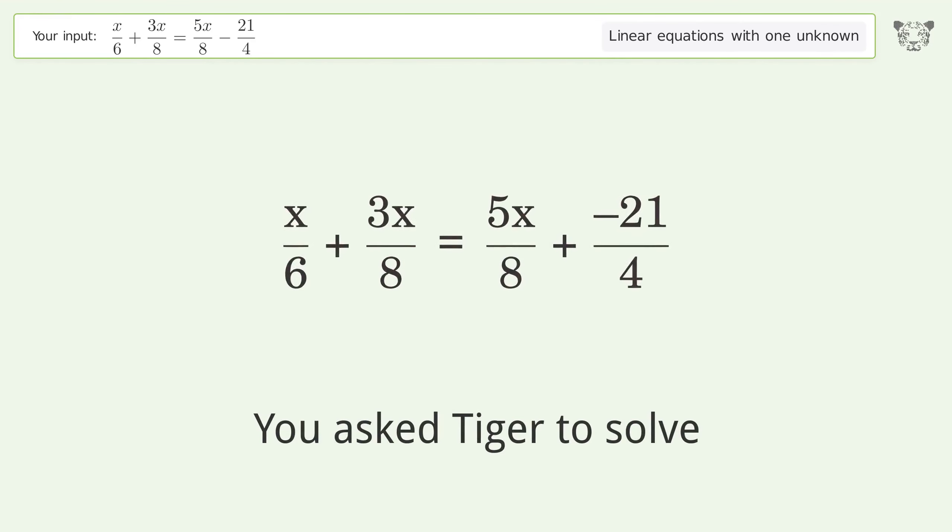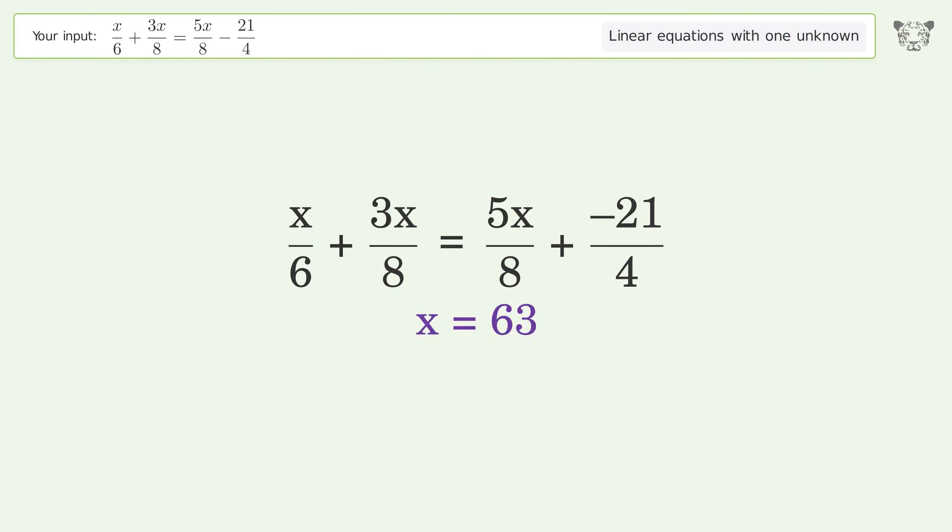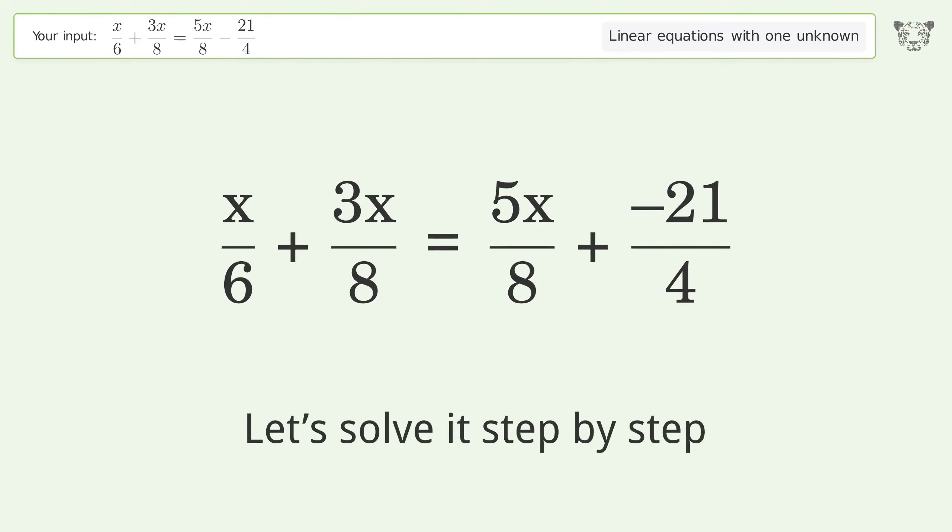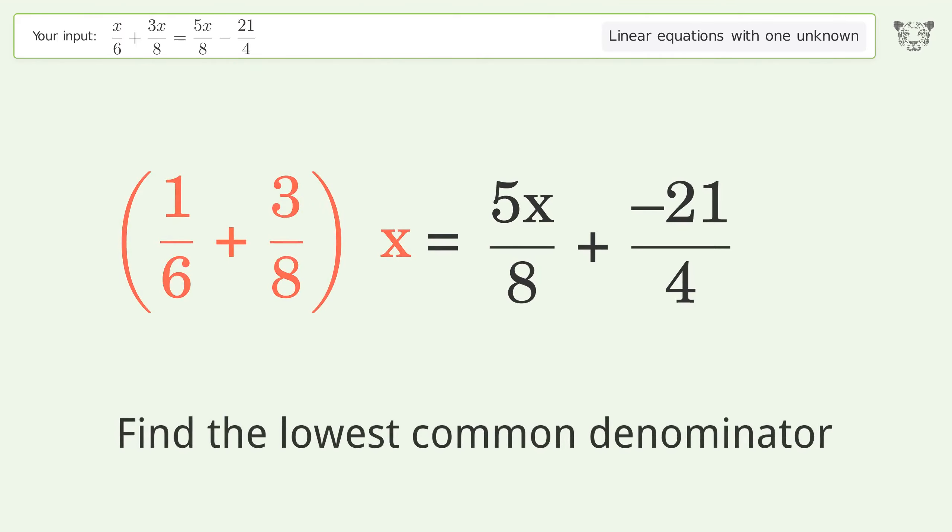You ask Tiger to solve this, which deals with linear equations with one unknown. The final result is x equals 63. Let's solve it step by step: simplify the expression, group the coefficients, and find the lowest common denominator.